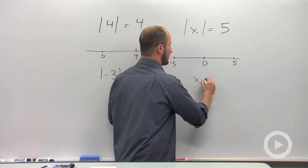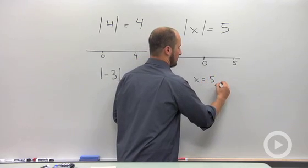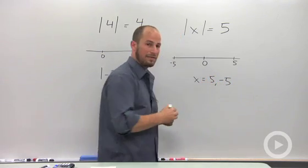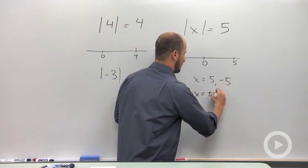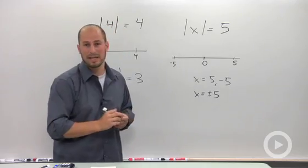So in this case we could say x is equal to five or negative five. You sometimes may see it written as x is equal to plus or minus five, depending on your notation.